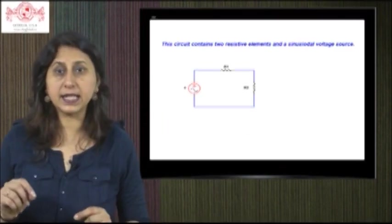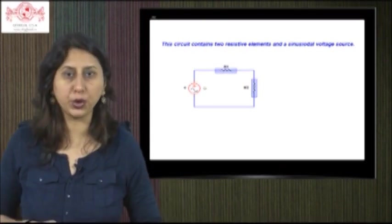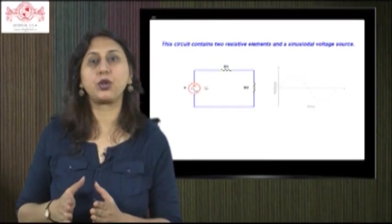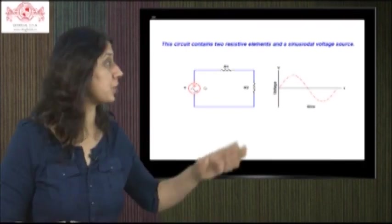The circuit contains two resistive elements and a sinusoidal voltage source. The voltage appearing across the source at any given time can be found using the relationship shown here.